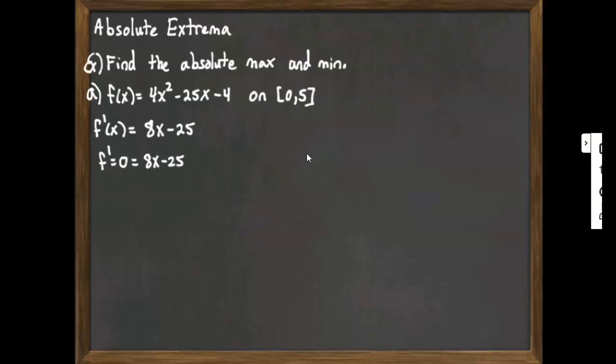Okay, so we set it equal to 0. When would that be 0? To solve that equation, we bring the 25 over and divide by 8. Now 25 eighths is 3 and 1 eighth. 3 and 1 eighth is in the interval 0 to 5, so it does count, so we are going to be using it.